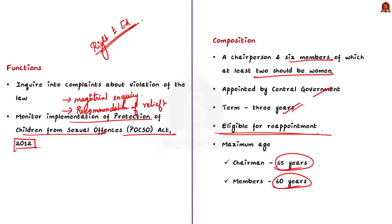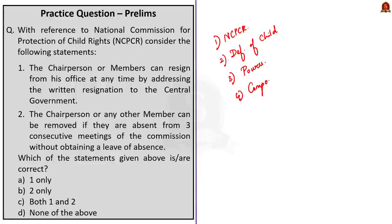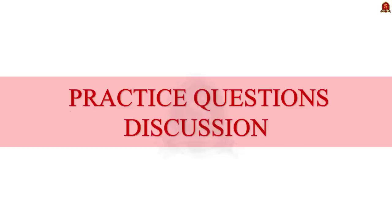The salary, allowances, and other terms and conditions of service for the chairperson and members shall be prescribed by the central government. That's all regarding NCPCR. In this discussion, we saw about NCPCR — a statutory body set up under the Commissions for Protection of Child Rights Act 2005 — the definition of child, the powers of NCPCR under the Right to Education Act 2009, the important functions of NCPCR, and finally the composition of the commission. Now let us move on to the Practice Prelims Question Discussion.